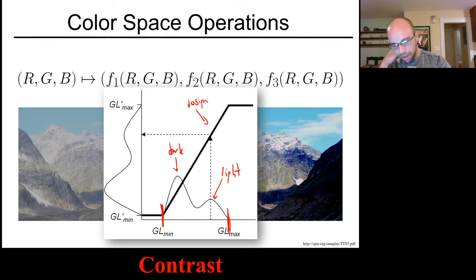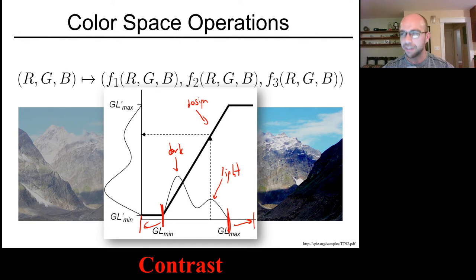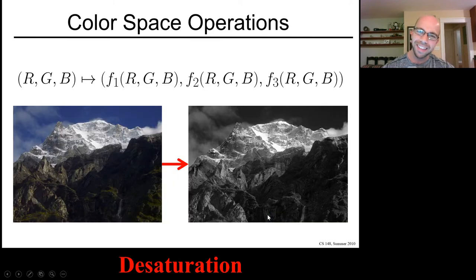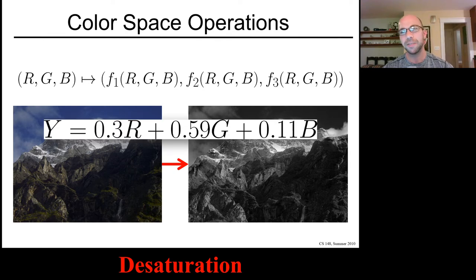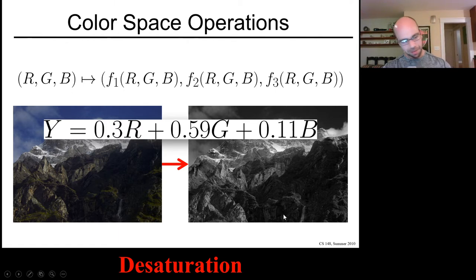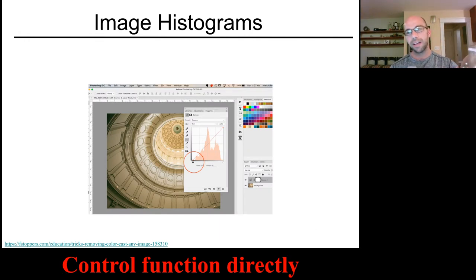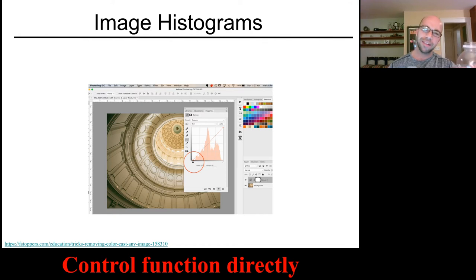Many color space operations motivate this kind of mathematics. Adjusting the brightness of a photograph is as simple as multiplying pixel colors by a constant. Increasing contrast can also be a per-pixel operation: you can design the functions f1, f2, f3 based on the histogram of pixel colors — for instance, stretching the range of pixel values out to 0–1 to make better use of the full range, which effectively increases contrast. You can also desaturate; a useful perceptual formula converts RGB to grayscale using a weighted ratio of red, green, and blue related to how the eye senses these colors.